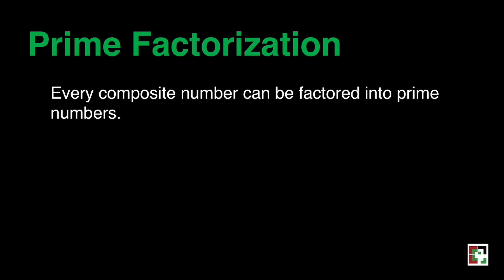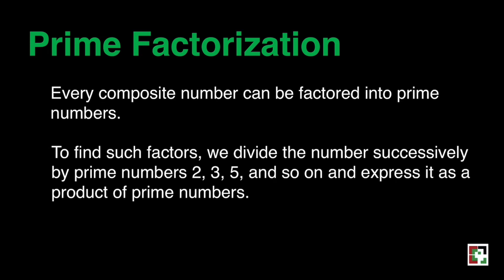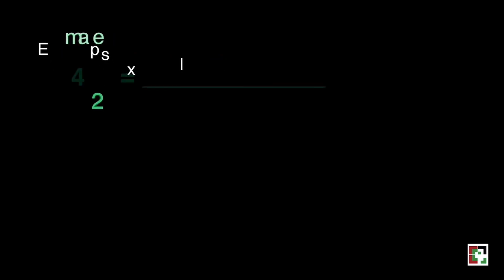What do you mean by prime factorization? Every composite number can be factored into prime numbers. To find such factors, we divide the numbers successively by prime numbers, 2, 3, 5, and so on, and express it as a product of prime numbers. Let's have some examples for you to understand how to do that.